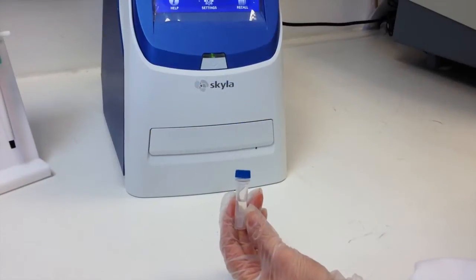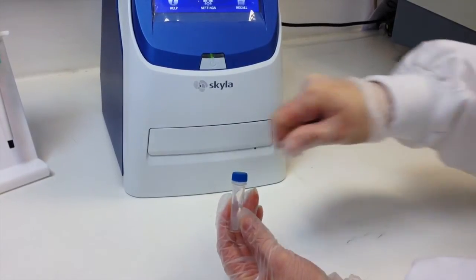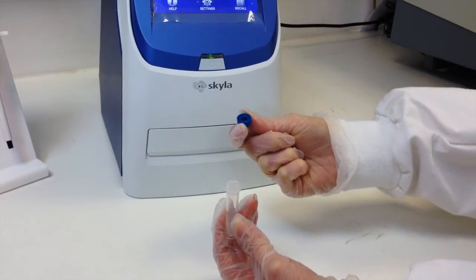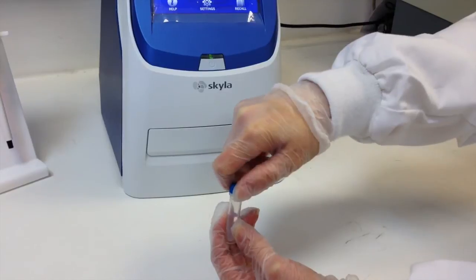The dilution tube contains 600 microliters of diluent. Please ensure there is no fluid in the cap before opening to prevent liquid loss and inaccurate results. The best way to ensure this is to centrifuge the tube for 10 seconds.